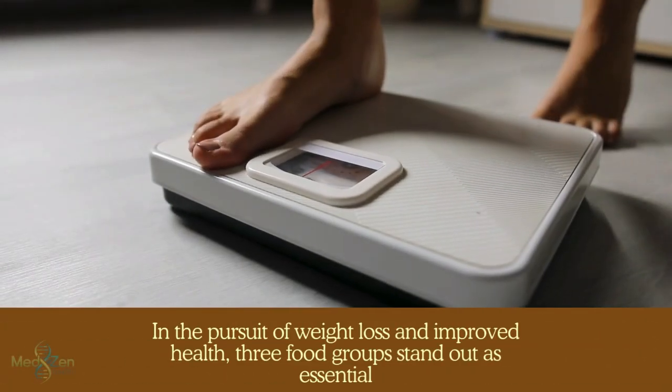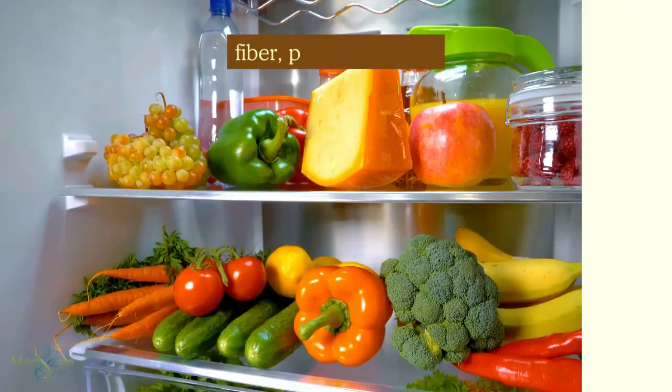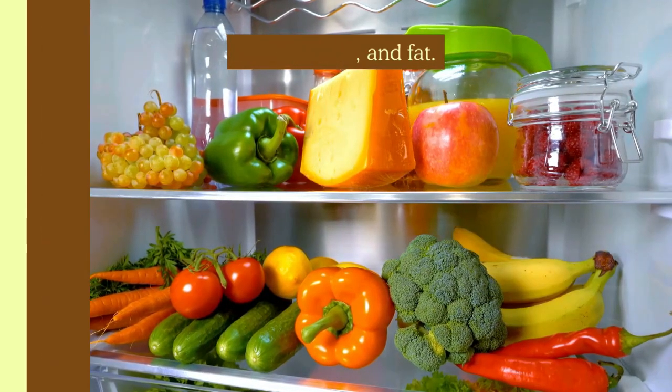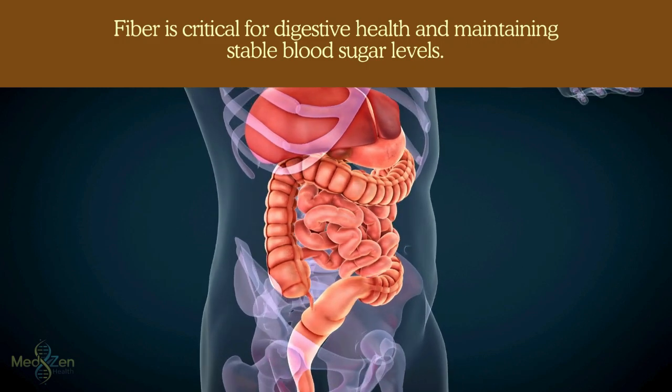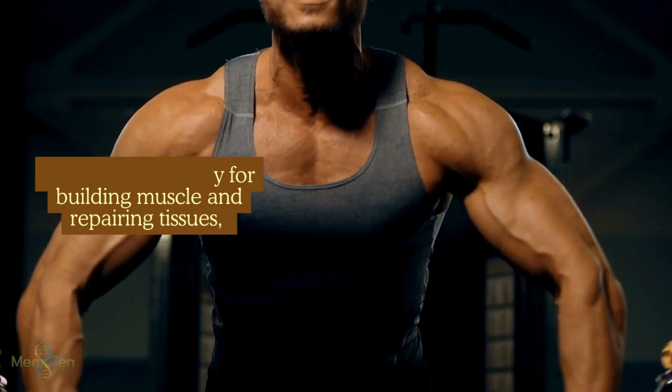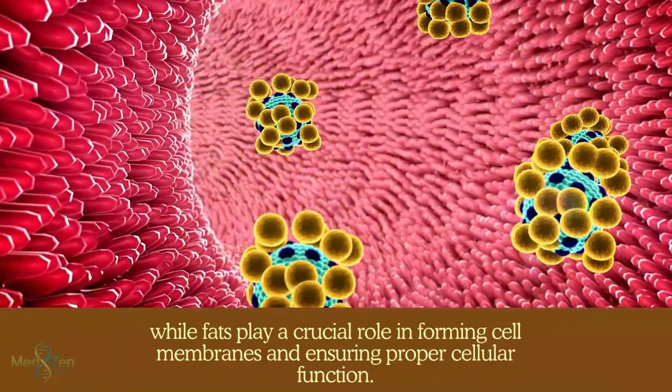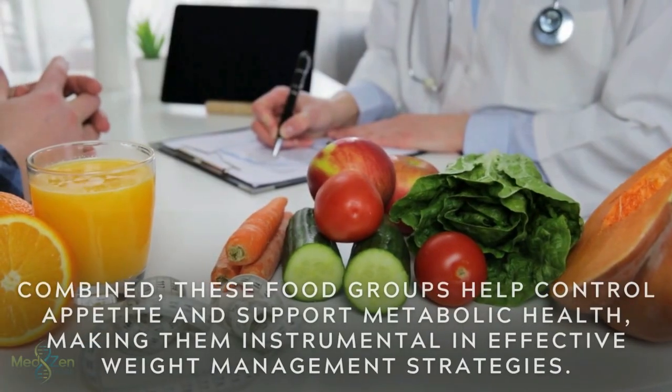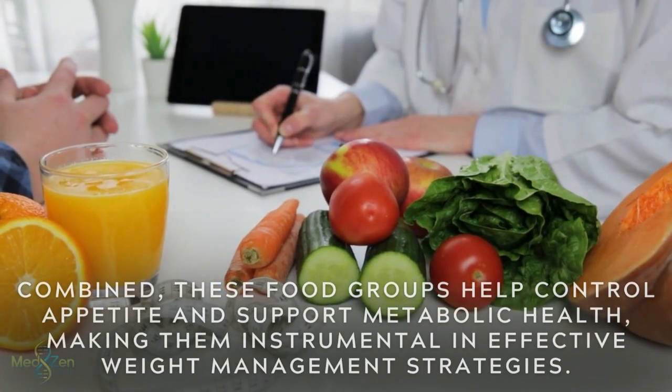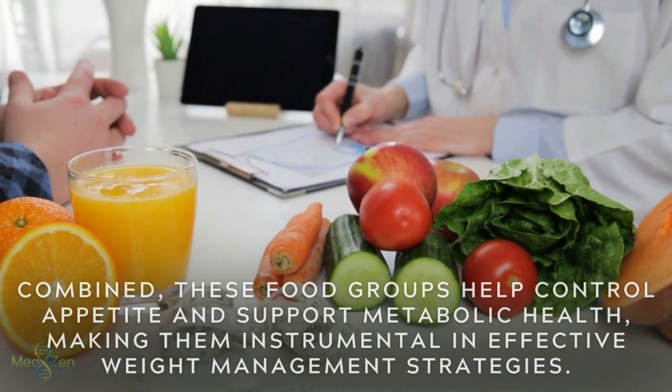In the pursuit of weight loss and improved health, three food groups stand out as essential: fiber, protein, and fat. Fiber is critical for digestive health and maintaining stable blood sugar levels. Protein is necessary for building muscle and repairing tissues, while fats play a crucial role in forming cell membranes and ensuring proper cellular function. Combined, these food groups help control appetite and support metabolic health, making them instrumental in effective weight management strategies.